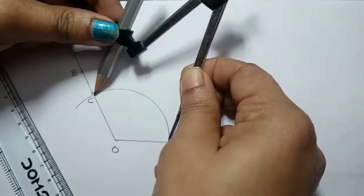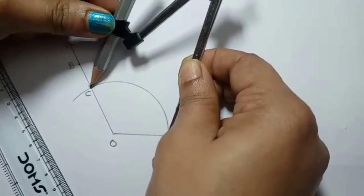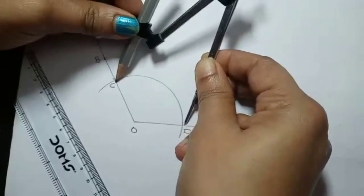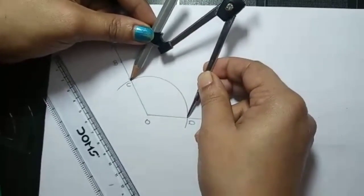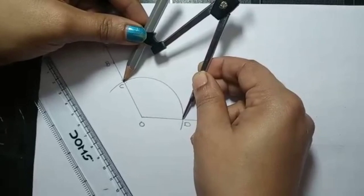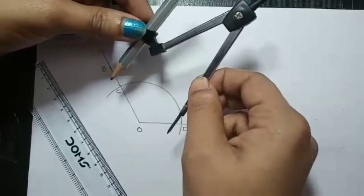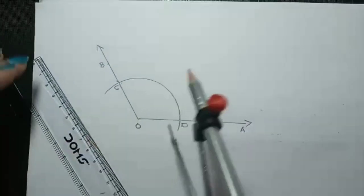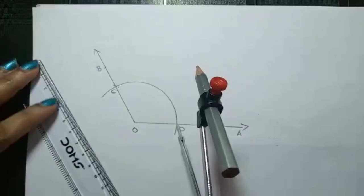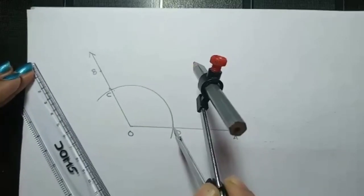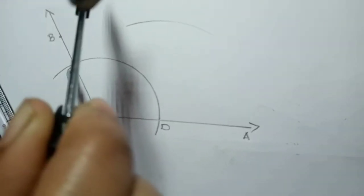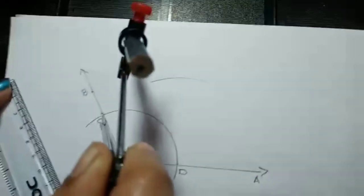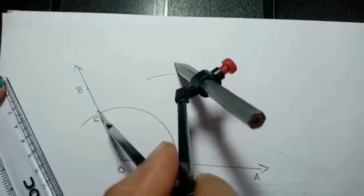So here, we have C and D. Just take the measurement of length of C and D like this. By keeping needle on D and pencil tip on C. Okay, so that measurement I am taking as radius. Now, without changing the radius, D as a center, draw an arc and C as a center, draw another arc.